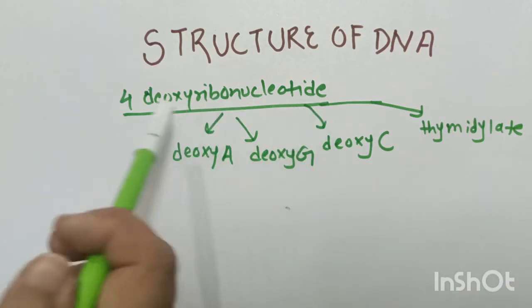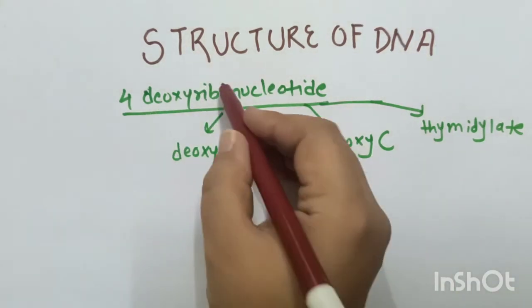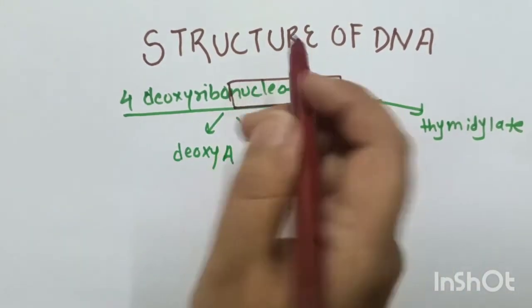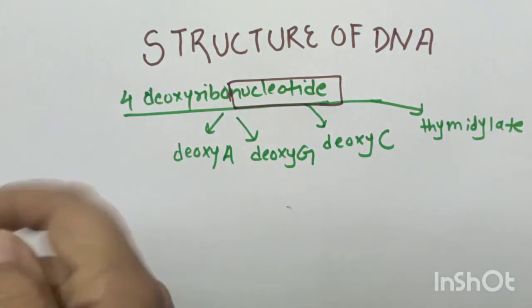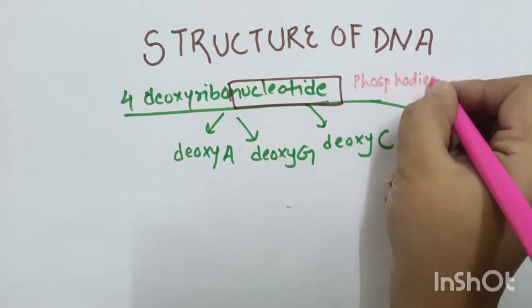Deoxyribonucleotide, there are four in the structure of DNA: deoxyadenylate, deoxyguanylate, deoxycytidylate and thymidylate. These nucleotides together are joined by a bond that is known as phosphodiester bond.